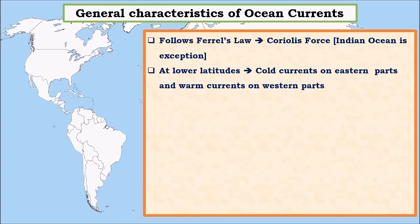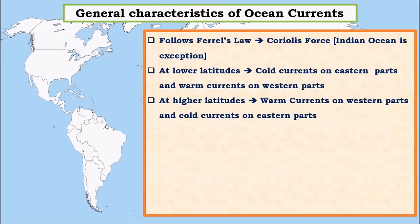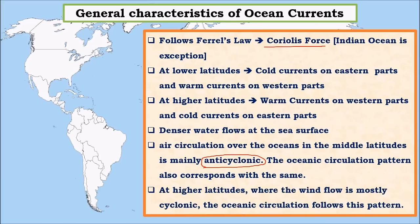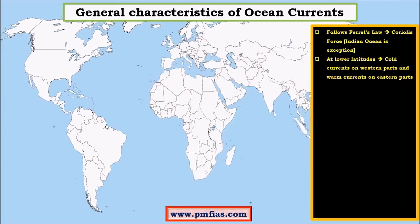Ocean currents follow Ferrell's law, which states that objects moving in the northern hemisphere move towards the right and objects in the southern hemisphere move towards the left — governed by Coriolis force. At lower latitudes, we see cold currents on the eastern parts of the oceans and warm currents on the western parts, whereas at higher latitudes warm currents occur on western parts and cold currents on eastern parts. Air circulation over oceans in middle latitudes is mainly anti-cyclonic.